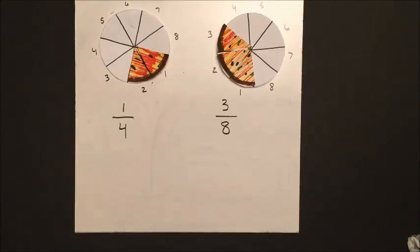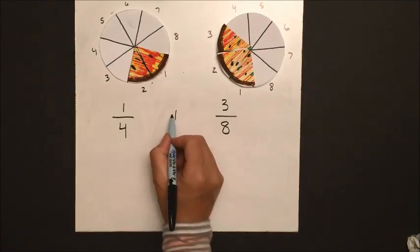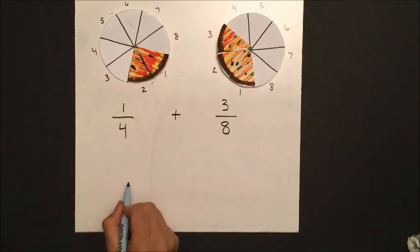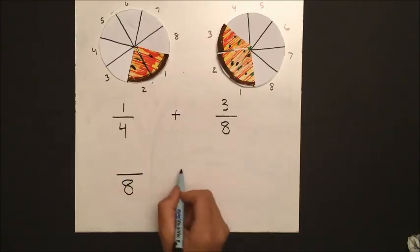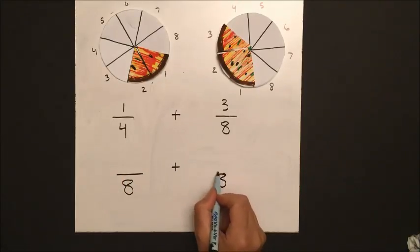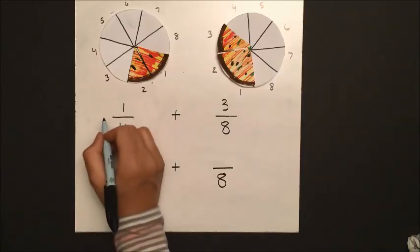And that works because the pieces are the same size. So in math talk, we need a common denominator or a common possible number of pieces.